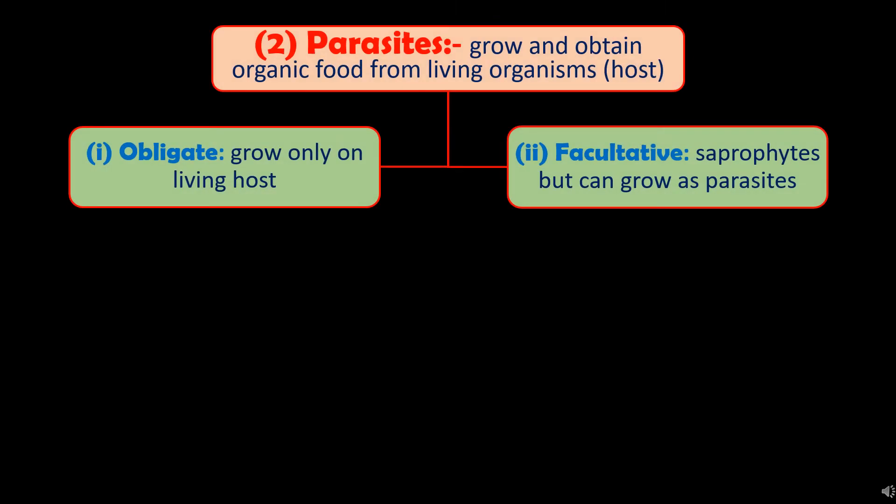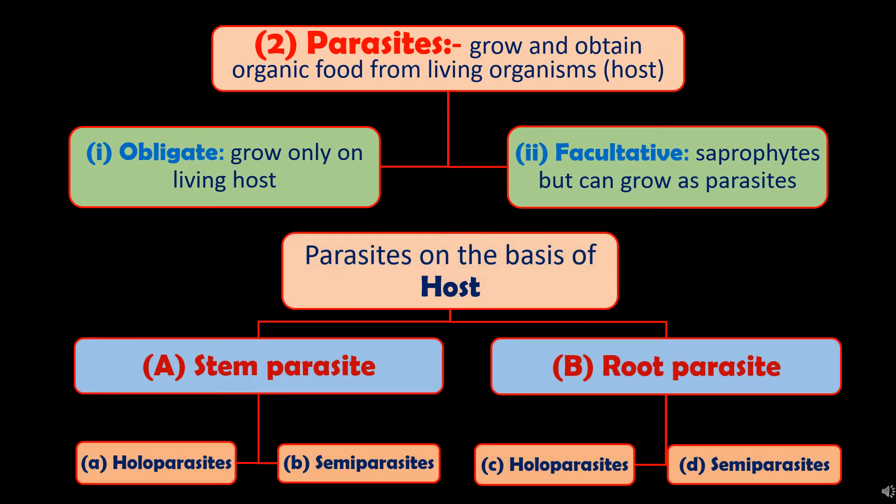The second category of heterotrophic plants is parasites. Parasitic plants grow and obtain their organic food from a living organism called the host. There are two types: obligate and facultative. Obligate parasites grow only on a living host, whereas facultative parasites are basically saprophytes but can grow as parasites also. On the basis of host attachment, parasites are categorized as stem parasites and root parasites.